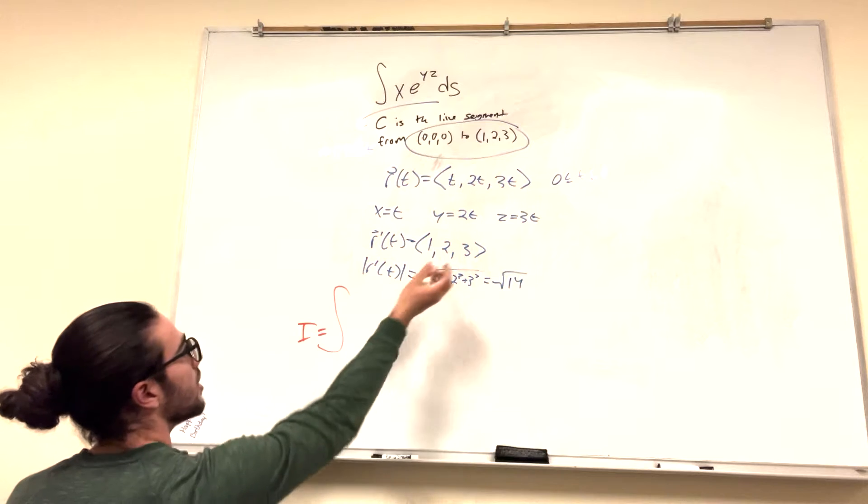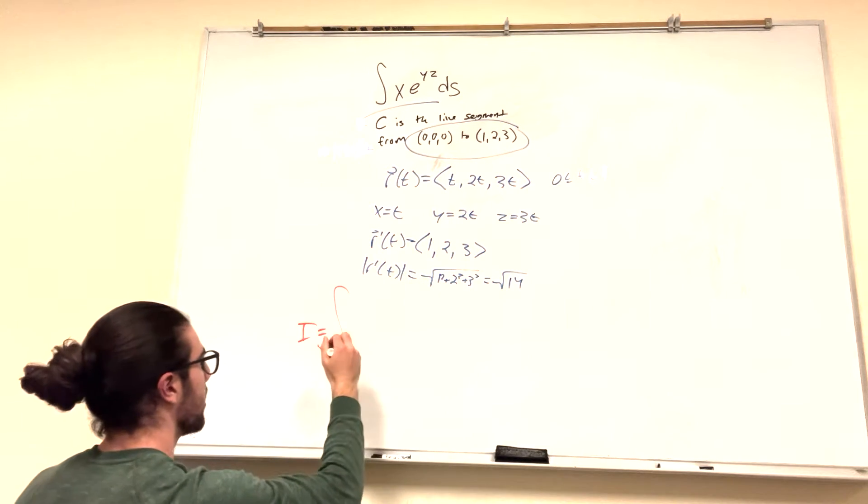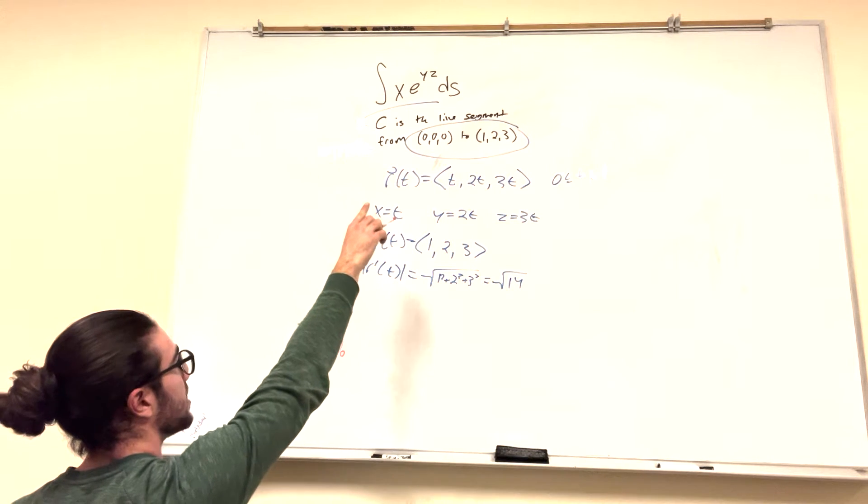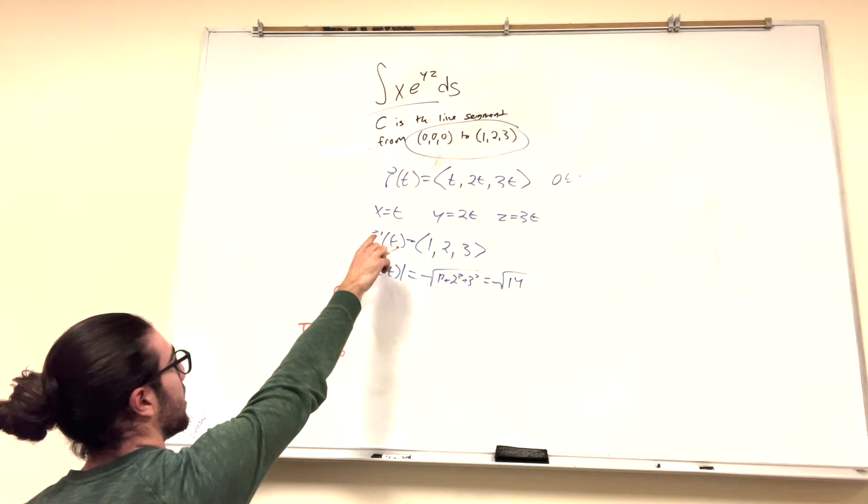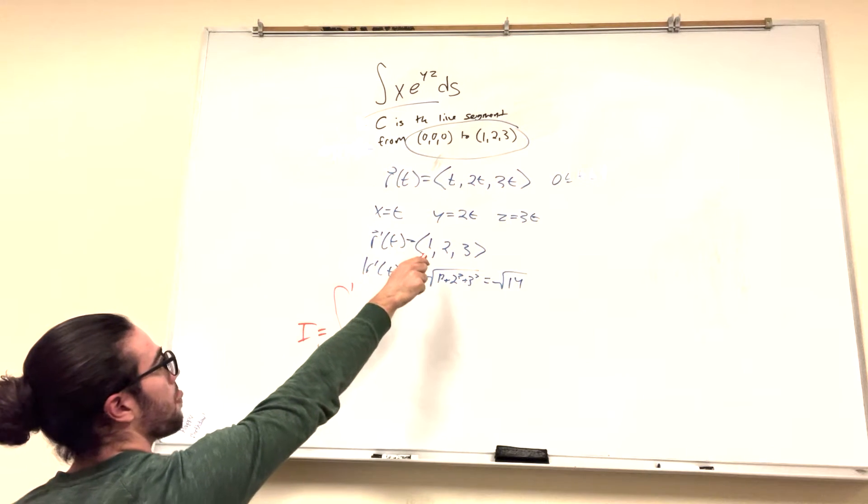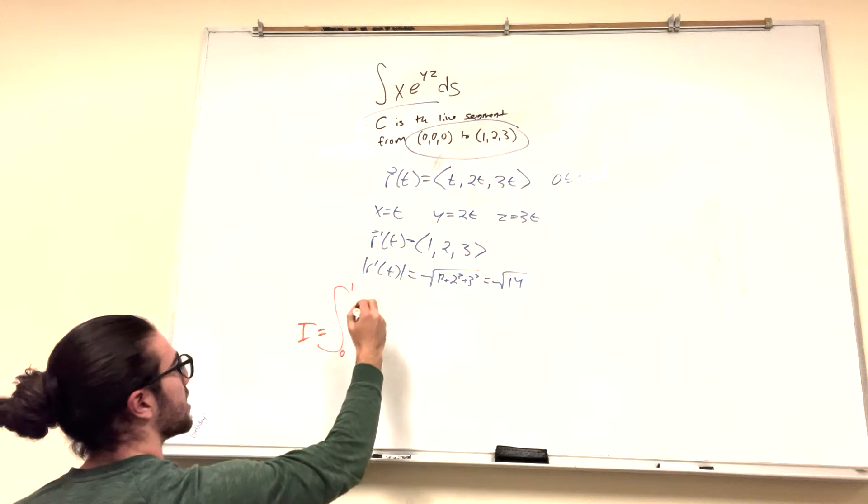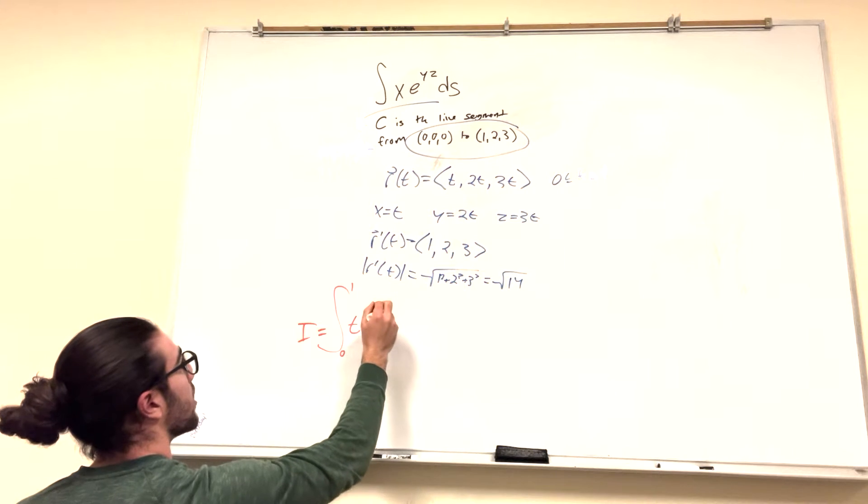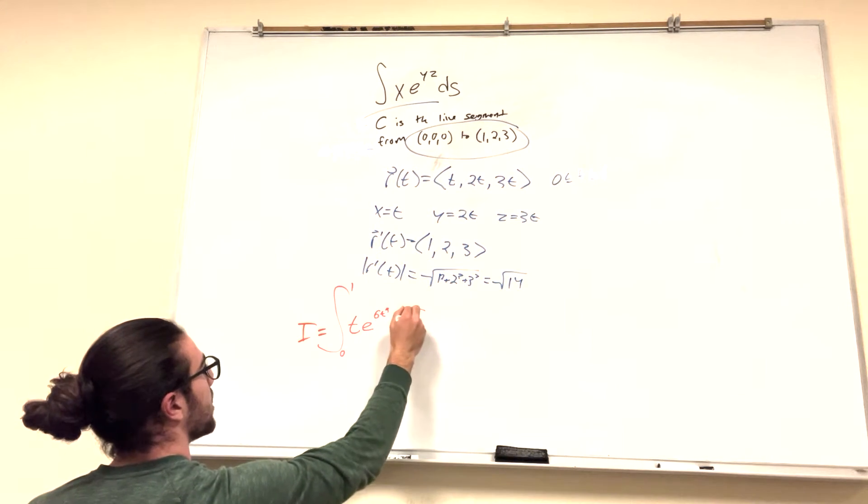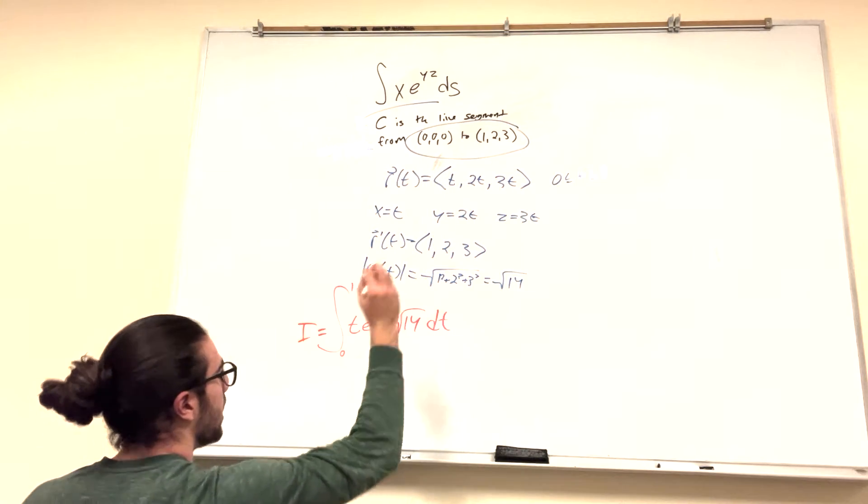The integral is equal to... I said our t goes from 0 to 1, right? So 0 to 1. We have xe to the yz. Well, we have that x is equal to t, so let's write that, te to the yz. So 2t times 3t is equal to 6t squared. ds becomes the magnitude, which is square root of 14 dt. And that's our integral.